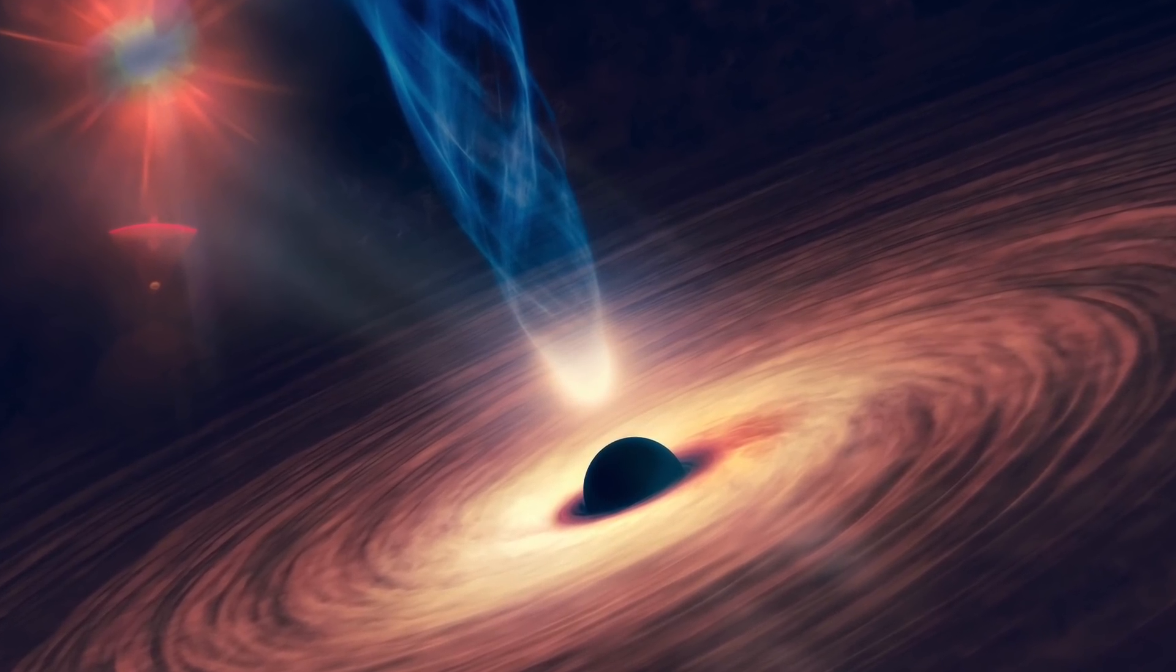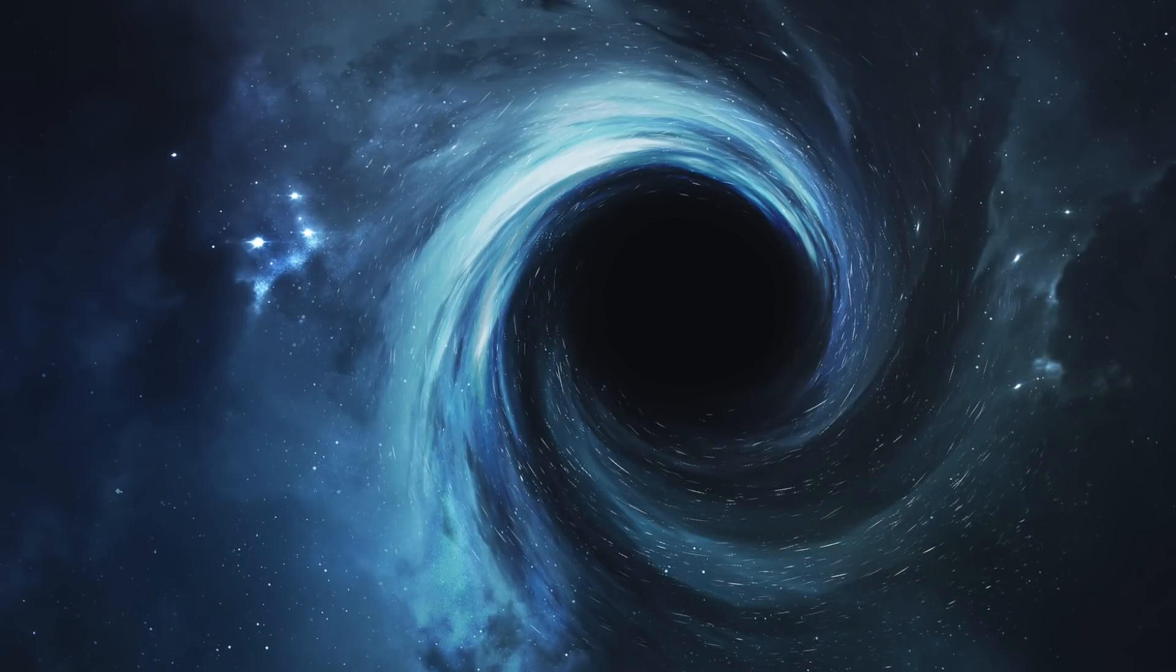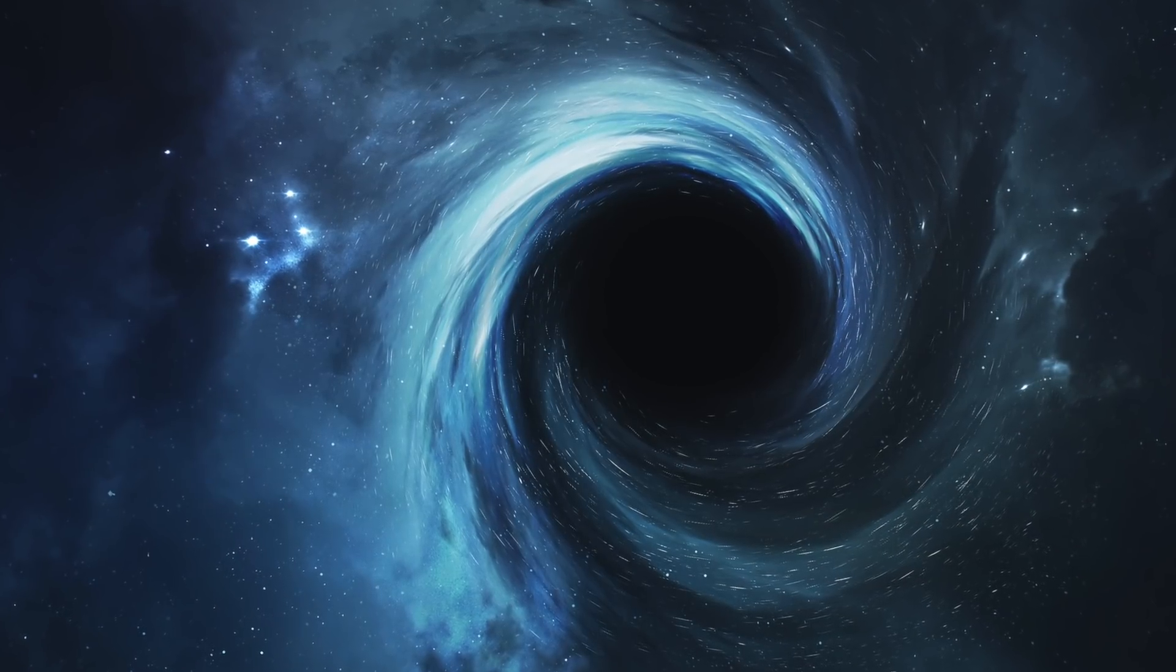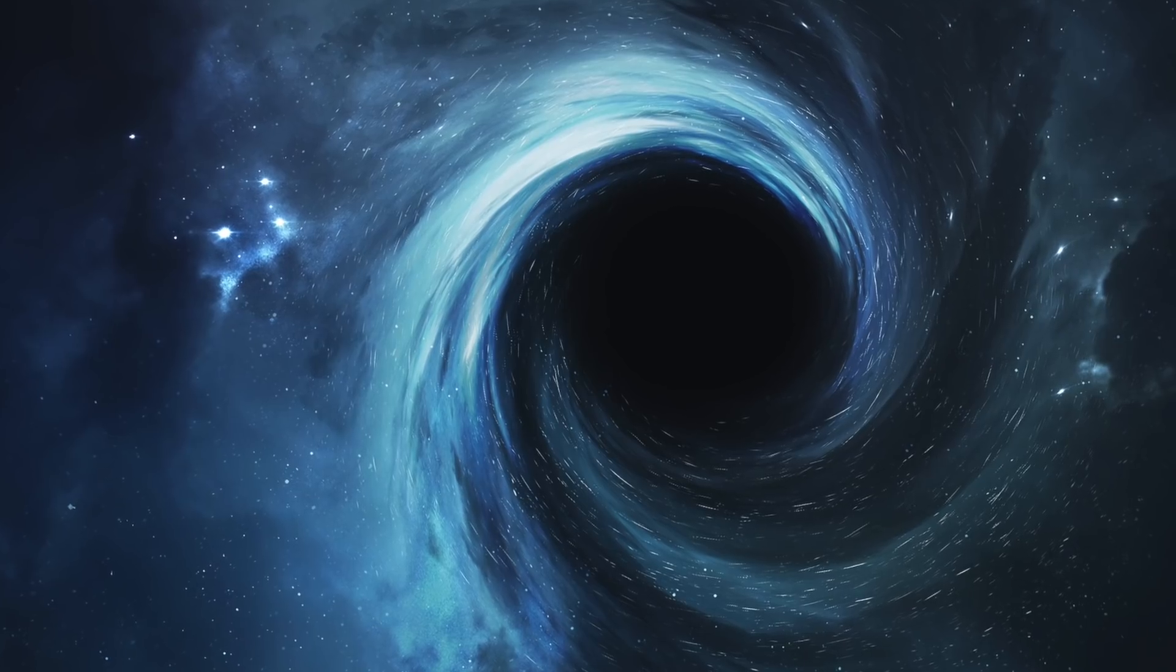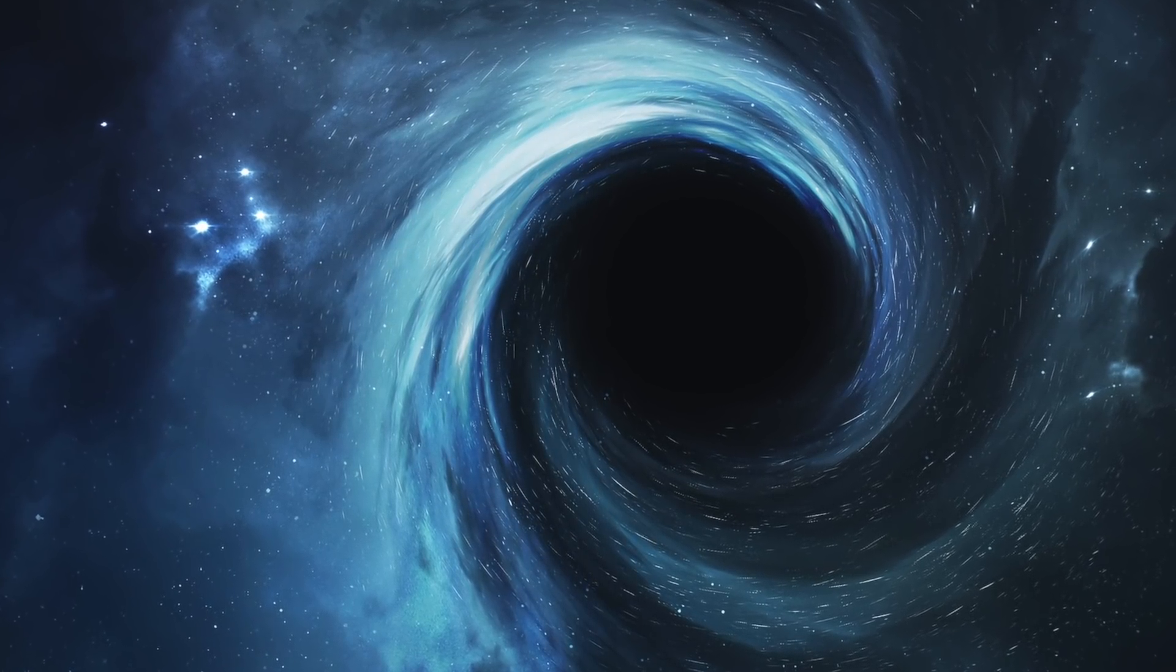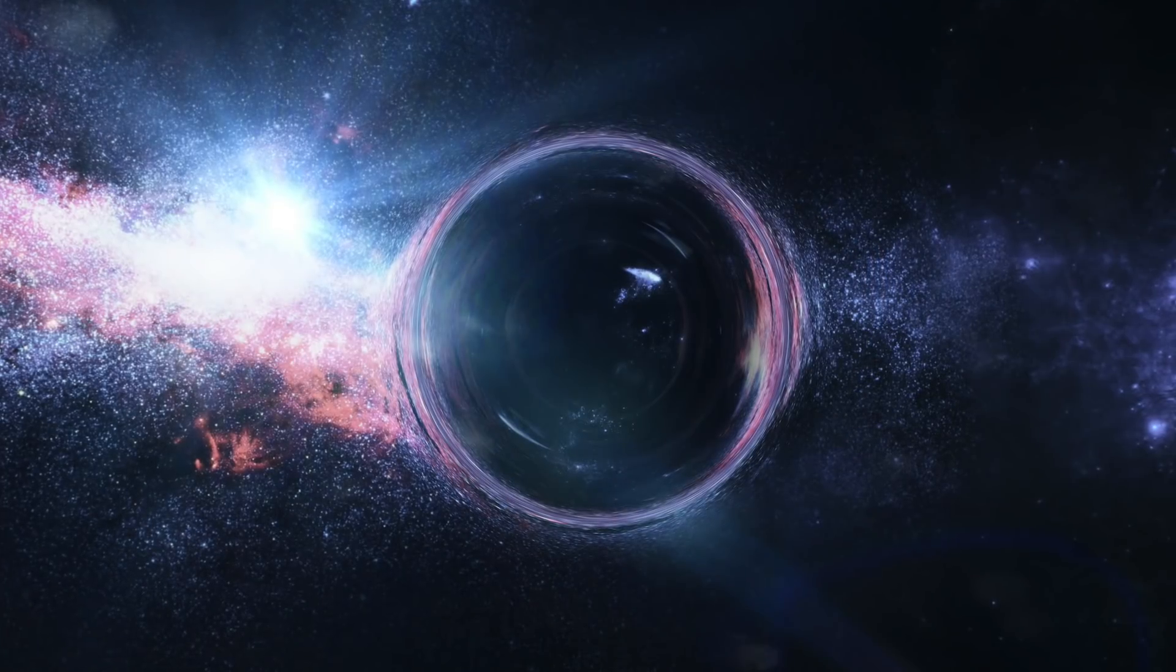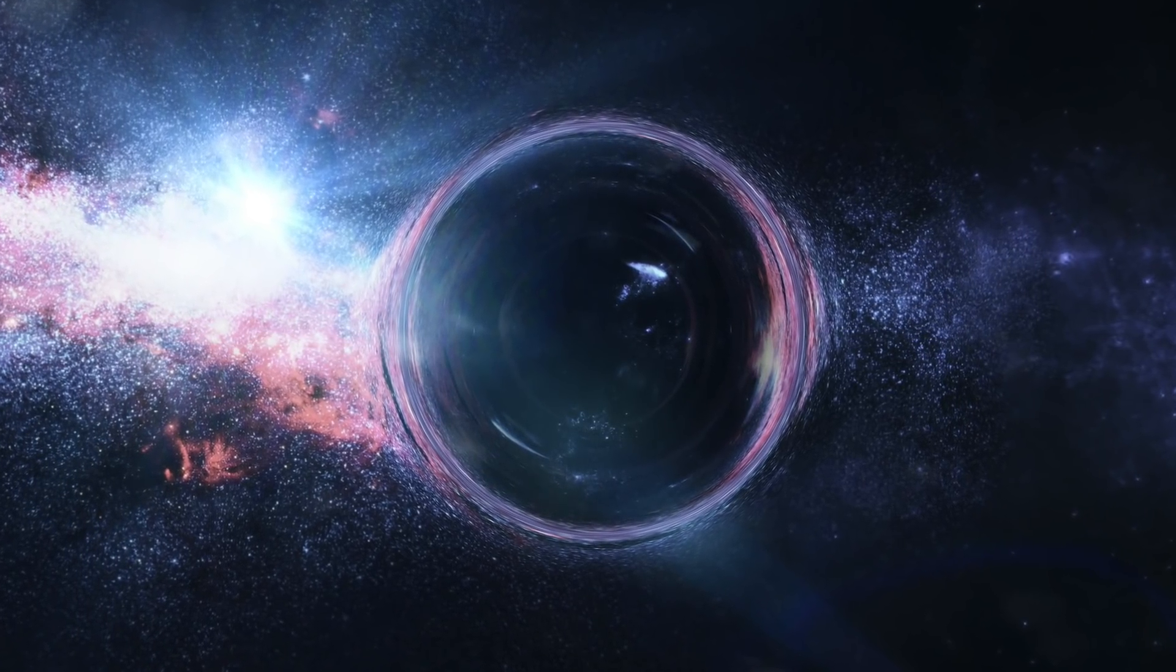The discovered black hole is named B023-G078, and it's shown researchers more about what happens when two galaxies collide. The black hole is what scientists call a stripped nucleus. This is created when a smaller galaxy is swallowed by a larger one. The smaller galaxy becomes very dense and starts to orbit the bigger one. The discovery has helped researchers understand the key relationship between black holes and stars and their responsibilities in galaxy formation.